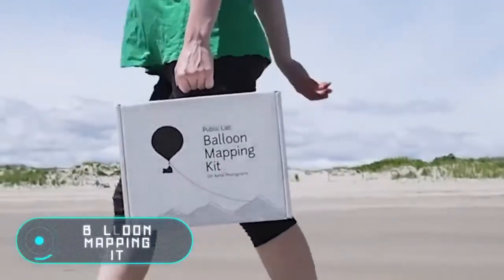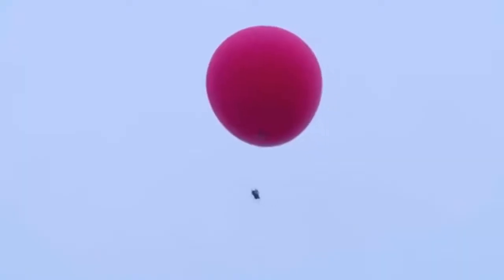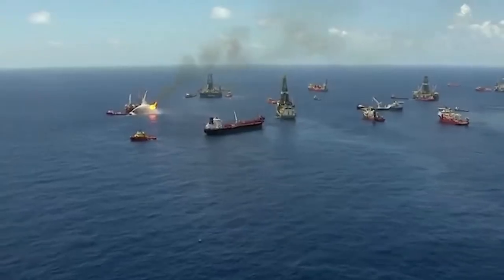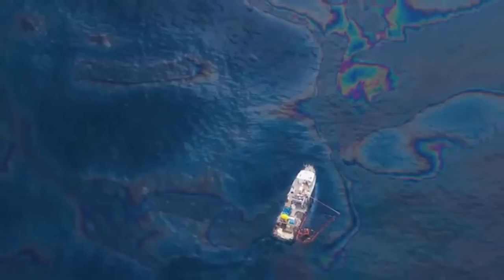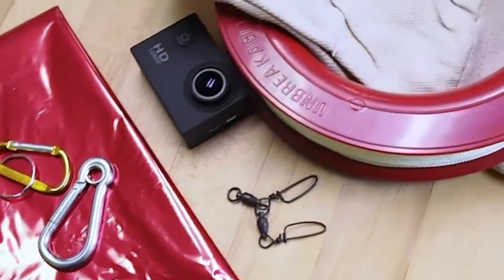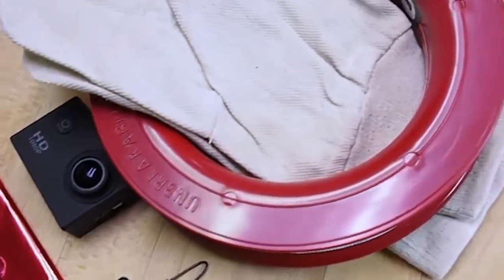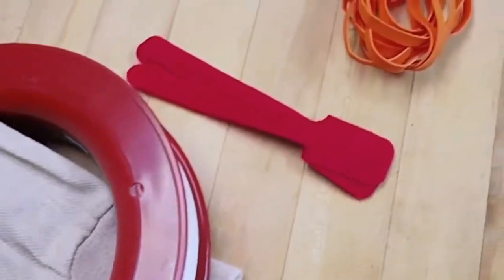Balloon Mapping Kits. On the platform Kickstarter were presented some special kits to create maps using a hot air balloon for aerial photography. The basic kit includes a briefcase, a 1,000 foot long rope, a 5.5 foot globe, gloves, rubber bands and zip ties.